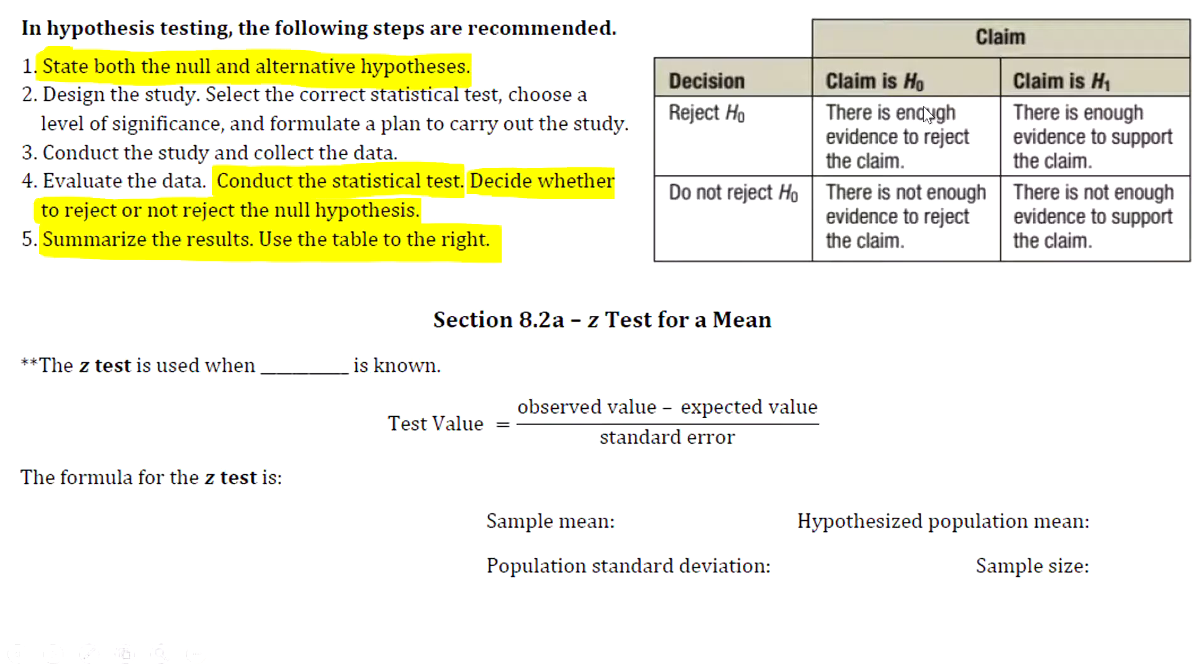If your claim is in the null and you reject the null, then you say there is enough evidence to reject the claim. If your claim is in the null and you don't reject the null, then you say there is not enough evidence to reject the claim. You'll notice that the word 'reject' is used when the claim is located in the null hypothesis.